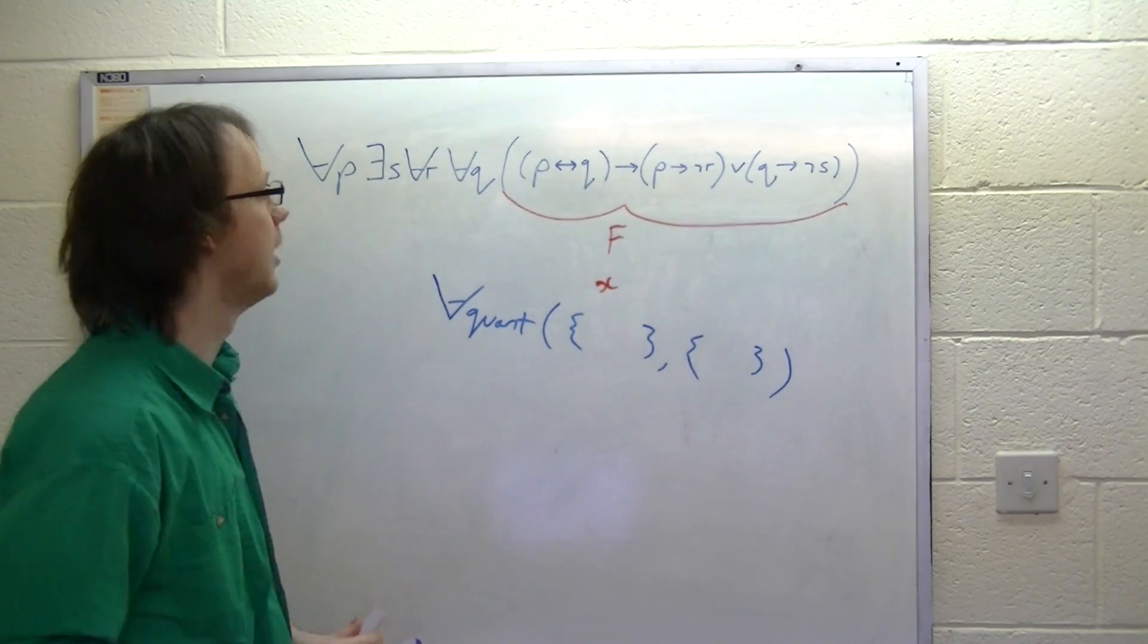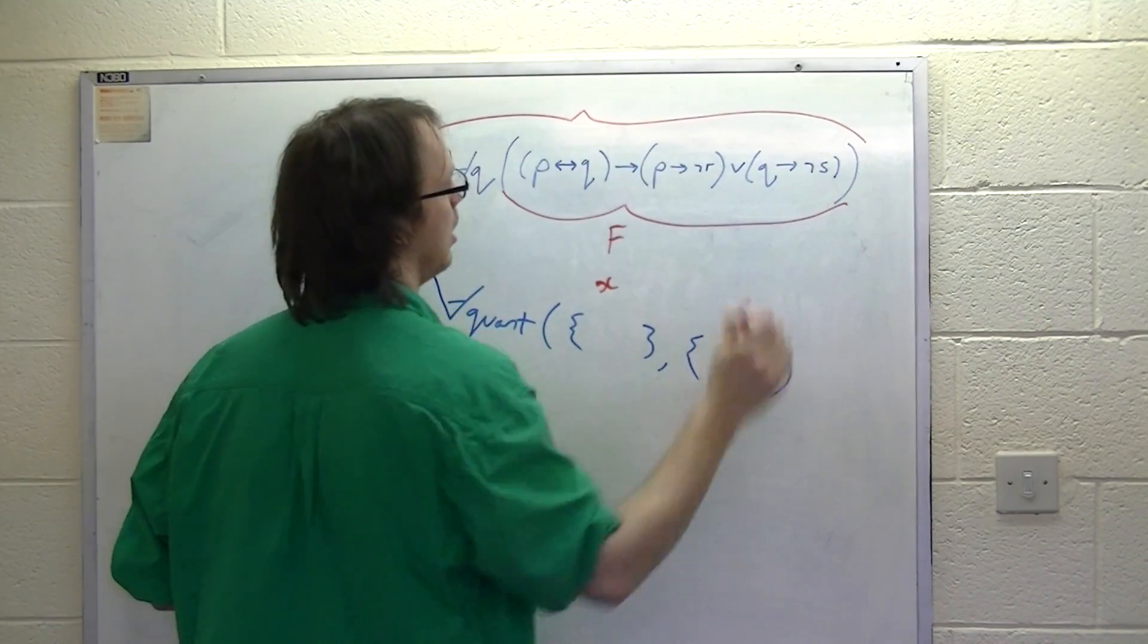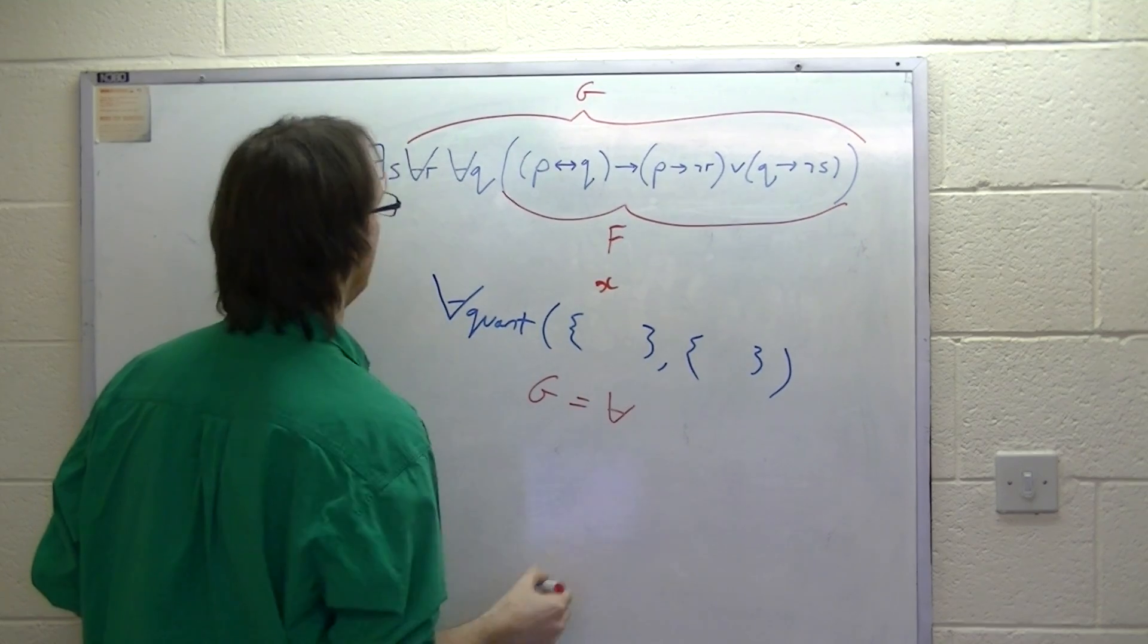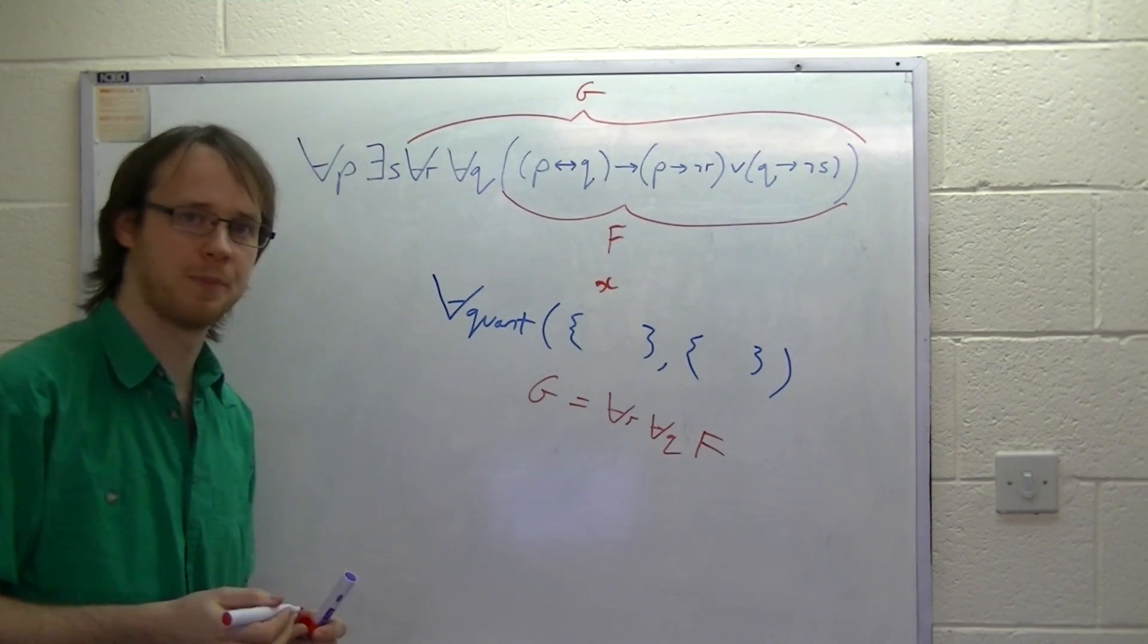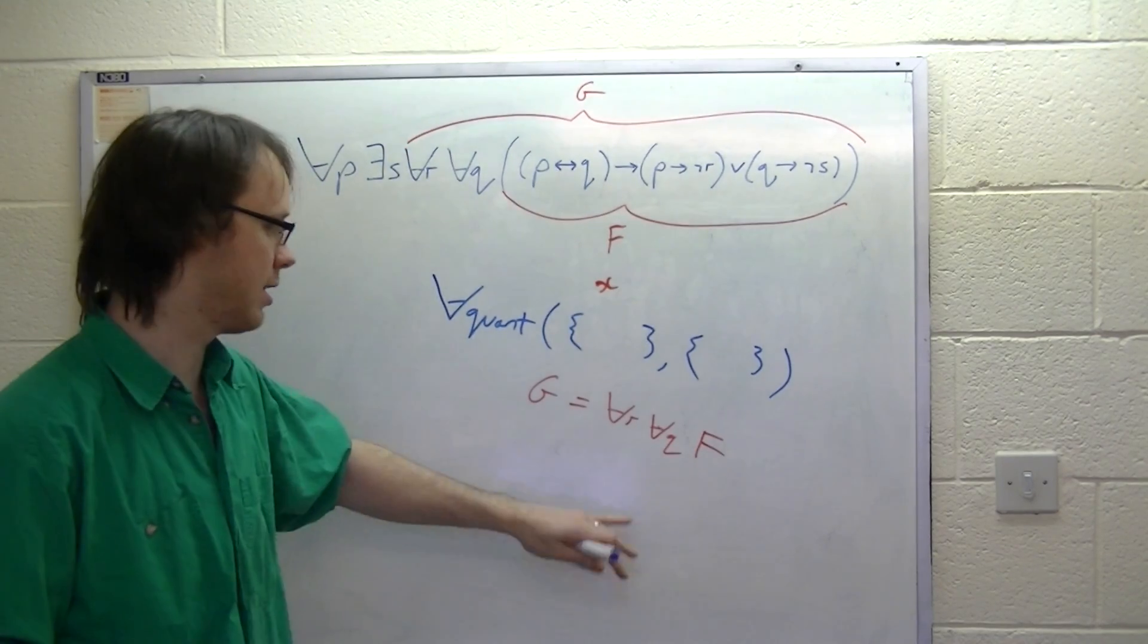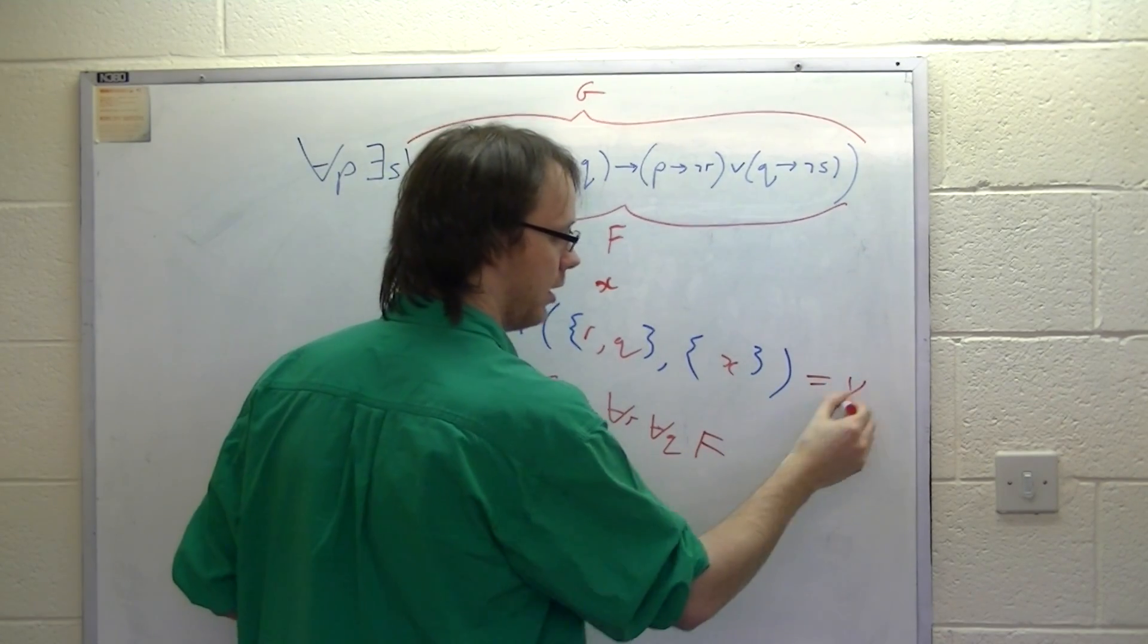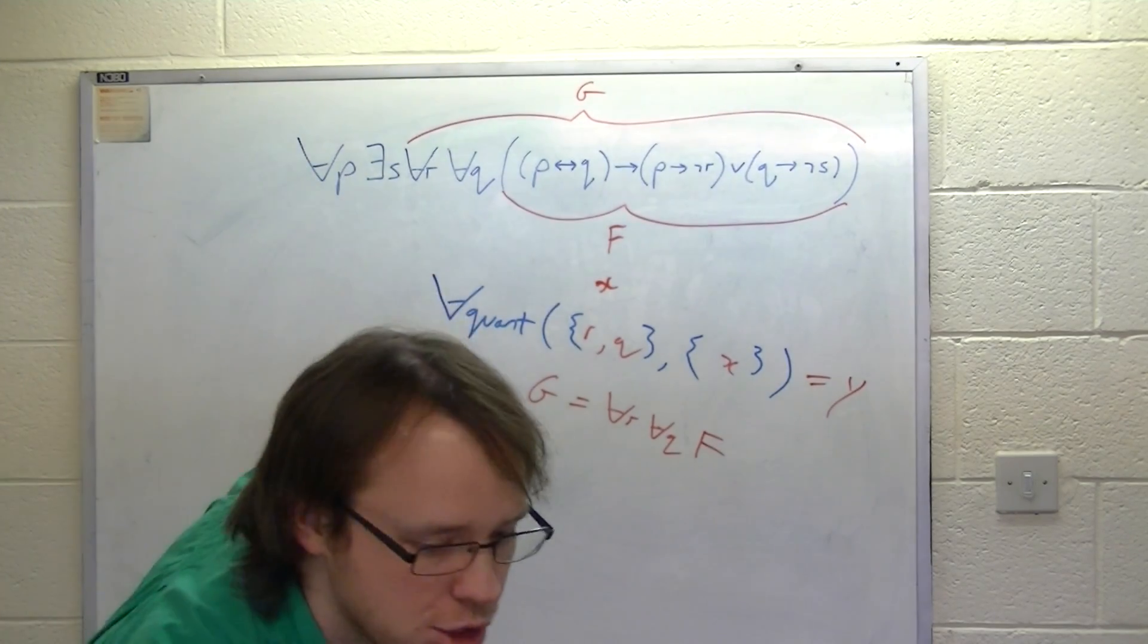So, let's look at our formula here, do we have anything of this shape? Well, we do. We have a big formula there, which we're going to call G. Now, G is of the form for-all R, for-all Q, F. So, we've got a node representing F, which is X. So, this is in our format we would like, and we can just run this with R and Q in there, X in there, and it's going to pop us out a node, let's call it Y.